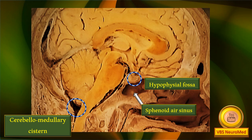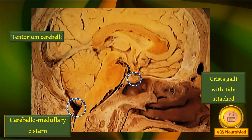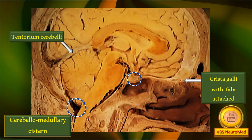Also particularly seen — though not part of the brain itself — marked by the flashing arrow, is the large sphenoidal air sinus. In fact, the roof of the sinus is also the floor of the hypophyseal fossa. At the anterior end, right above the nose, you can see the crista galli, which is a part of the ethmoid bone — we have covered that in osteology. Attached to it is the anterior end of the falx cerebri, which is a dural flap.